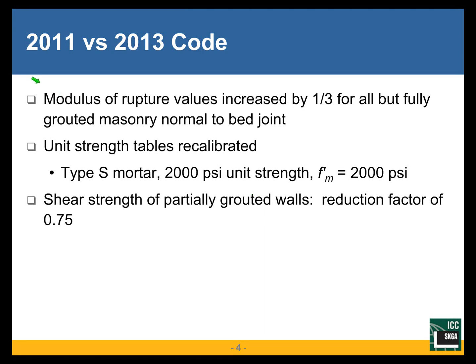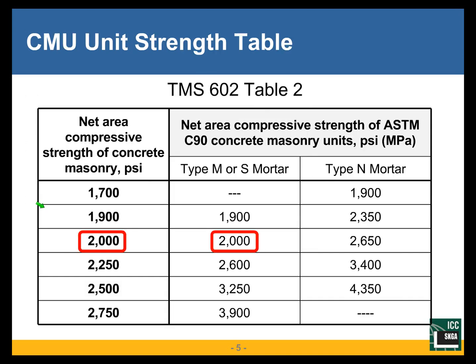Three major changes going from 2011 to 2013. One is the modulus of rupture values were increased by one-third for all but fully grouted masonry, normal to the bed joint. This relates to recalibrating allowable stress design and doesn't really affect reinforced masonry design, other than out-of-plane walls where we're calculating deflections and need the cracking moment. Another big change: the unit strength tables were recalibrated. And also, we introduced partially grouted shear wall factors — we reduced the shear strength of partially grouted walls by 25%.